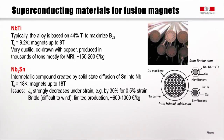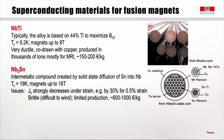The second material is niobium-tin (Nb₃Sn), an intermetallic compound created by solid-state diffusion of tin into niobium. It has a critical temperature of 18 K, and magnets can reach up to 18 Tesla — very interesting for fusion. However, its critical current density strongly decreases under strain: 0.5% strain is sufficient to reduce it by 30%. It is a brittle material, difficult to wind into coils, with limited production and a cost of about 600 to 1000 euros per kilogram.